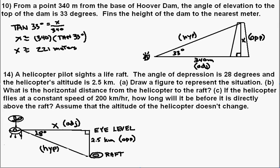Number 14: a helicopter pilot sights a life raft. The angle of depression is 28 degrees and the helicopter's altitude is 2.5 kilometers. Draw a figure to represent the situation. Here's our figure — there's the helicopter flying at eye level, 2.5 kilometers from the ground. There's the raft. Angle of depression: 28 degrees.